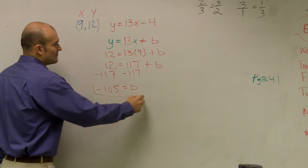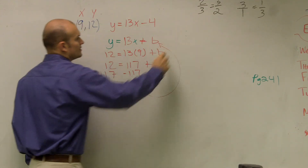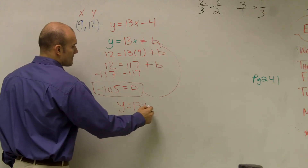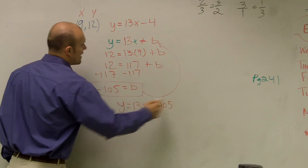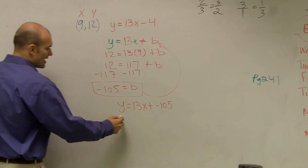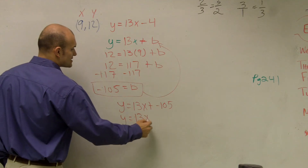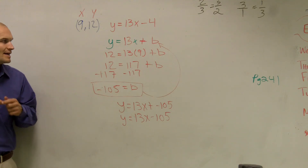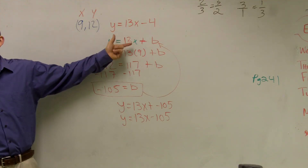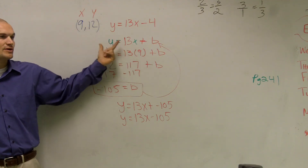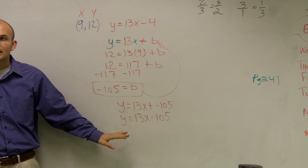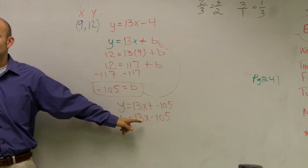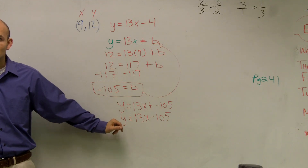So now I have my new b. I can plug this b into my equation. So I have y equals 13x plus negative 105, or simplified, y equals 13x minus 105. So just remember, when you're finding parallel lines, use the same slope. And if it goes through a point, plug in your points for x and y to solve for your new b, which is your y-intercept. Once you know your y-intercept, add it into your equation. So you all have a parallel line problem you can do — let's give it a shot.